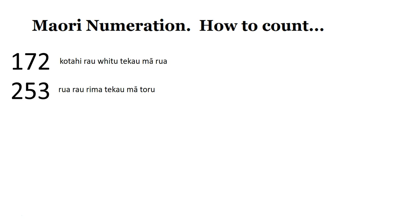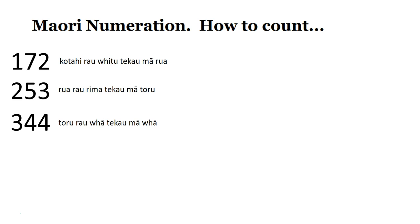253 — we say rua rau, rima te kau mā toru. So that's two hundreds, rima te kau is five tens, mā toru is add 3. 344 — we say toru rau, whā te kau mā whā. So we have three hundreds, four tens, and we add 4.